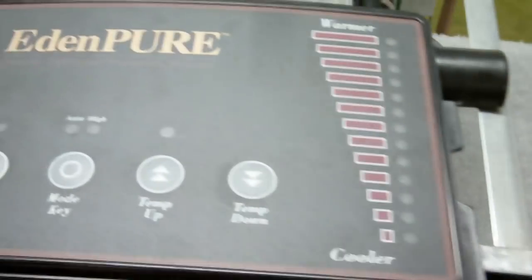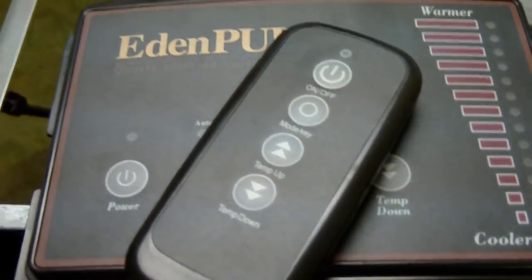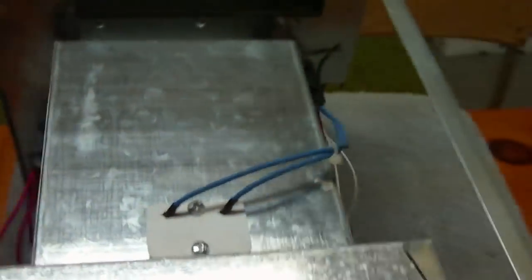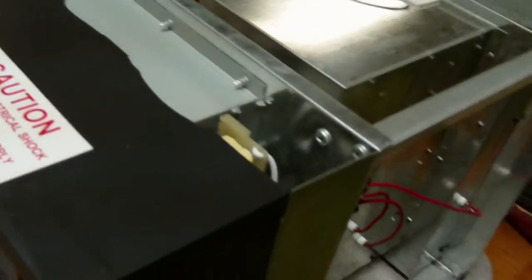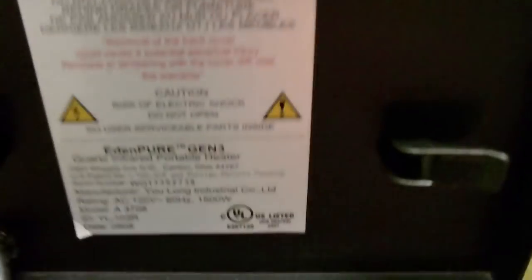The unit comes with a remote control which is here. All the remote and all the LEDs and the panel, all the buttons and everything seem to work, but the fan doesn't come on. I don't understand if it says that it's a quartz infrared heater, which is what it says on the back here, how they can call it that kind of a device.